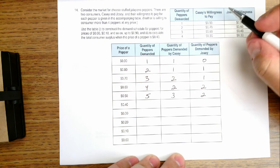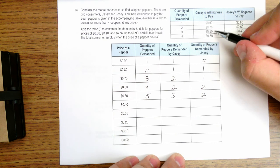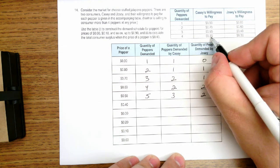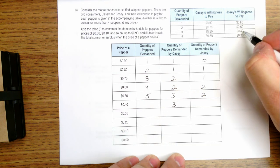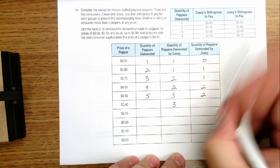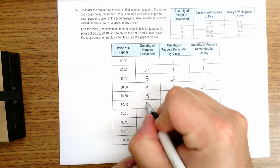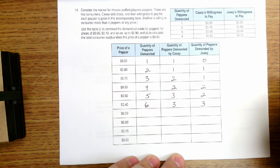At $0.40, Casey's willing to only buy three. In order to get the fourth pepper, the price has to be $0.30. Josie is willing to buy three because her maximum price she's willing to pay for three peppers would be $0.40. Six total demanded in the market at $0.40.